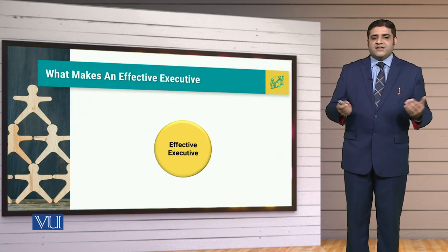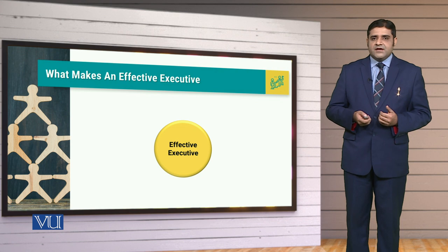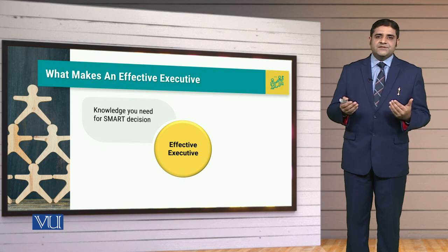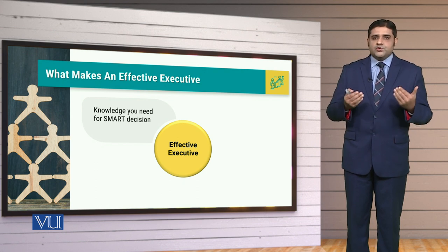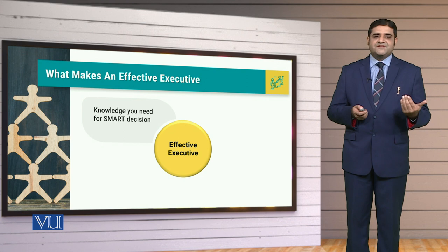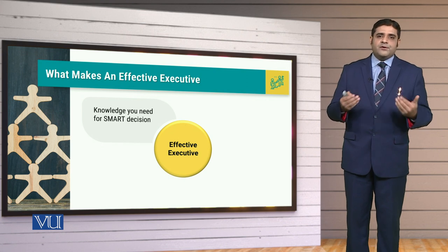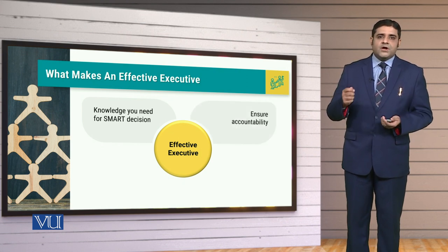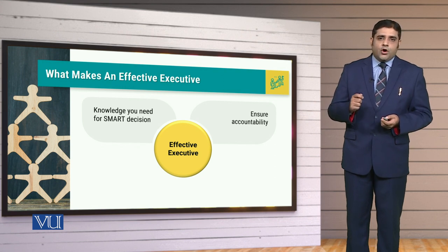Now when we talk about what makes an effective leader, the effective leader and effective executive would have the knowledge of smart decisions and would have the knowledge to come up with smart objectives as well, and he or she would be able to define when to go smart. Secondly, the effective leader and effective executive would ensure accountability — who is responsible for which task and there should be answerability for it.